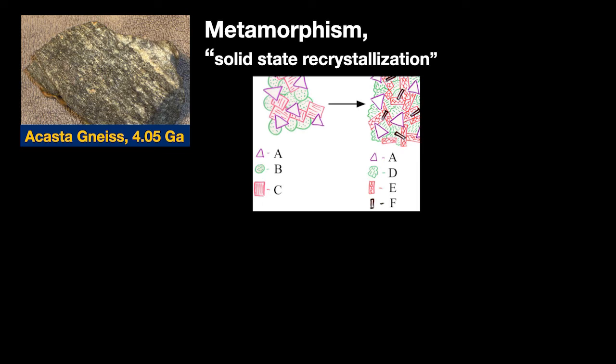Lastly, metamorphism and metamorphic rocks. These aren't quite as intuitive or familiar from our everyday experience. In a nutshell, metamorphic rocks are rocks that were once other rocks and have undergone change due to heat and pressure. They generally form at depth in the roots of mountain zones or continental interiors. Here's one we've seen before — the world's oldest rock, the Acasta Gneiss from Northwest Territories Canada, dated at over 4 billion years old. During metamorphism, an initial rock containing minerals A, B, and C gets heated and squeezed, and elements recombine to produce a new suite of minerals — in this case, something like quartz and mica and clay becoming quartz, amphibole, garnet, and feldspar.